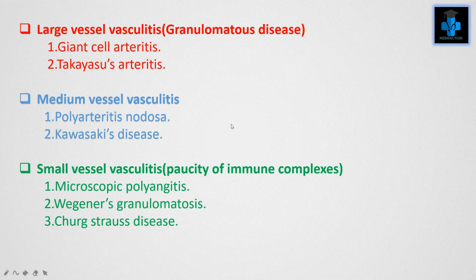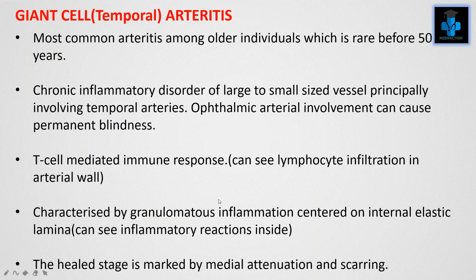Going into detail, we have large vessel vasculitis, also known as granulomatous disease, medium vessel vasculitis, and small vessel vasculitis. Subtypes include Takayasu's arteritis and giant cell arteritis under large vessel; polyarteritis nodosa and Kawasaki disease under medium vessel; and microscopic polyangiitis, Wegener's granulomatosis, and Churg-Strauss disease under small vessel vasculitis.